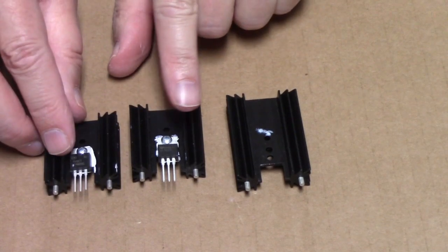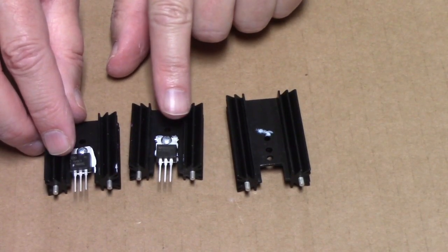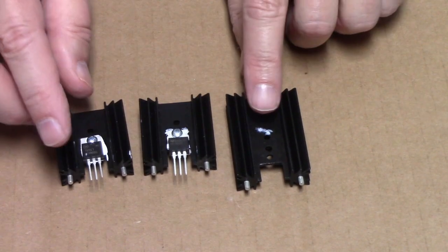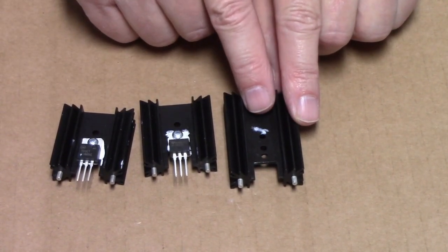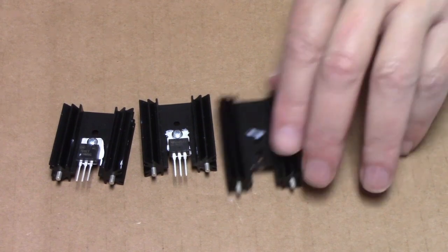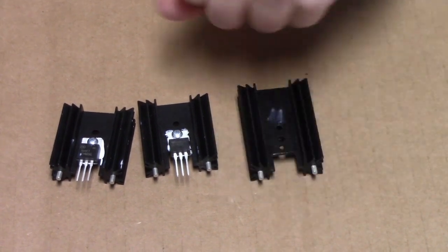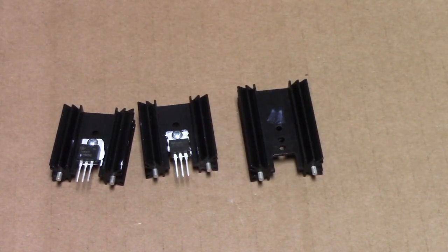So one of these is a negative voltage regulator for 12 volts, a positive voltage regulator for 12 volts. You'll notice that this heat sink is longer than the other two. This is the one for the 5 volt regulator. Also please note that these regulators are not interchangeable.